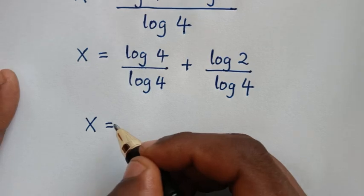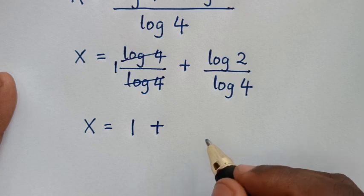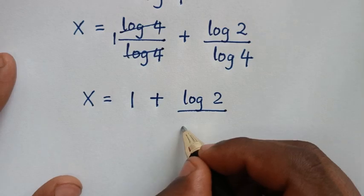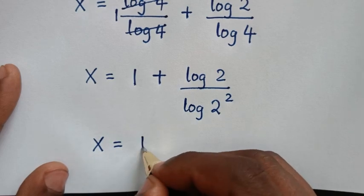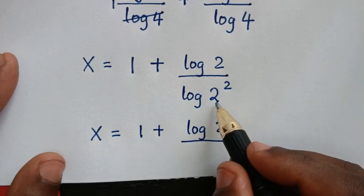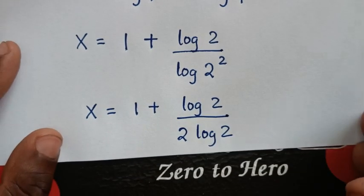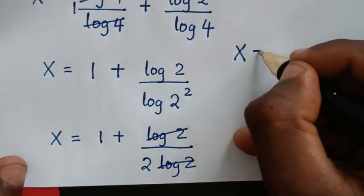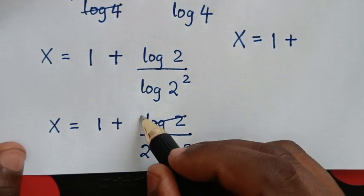So x is equal to log of 4 divided by log of 4, which is 1, plus log of 2 over log of 4. Now, log of 2 over log of 4 is the same as log base 4 of 2. In the next step, log of 4 is the same as log of 2 squared, so this power of 2 moves to the front, giving 2 times log of 2. This log of 2 will cancel with the log of 2 in the numerator.